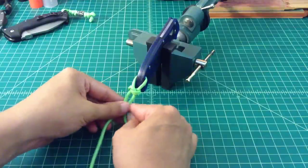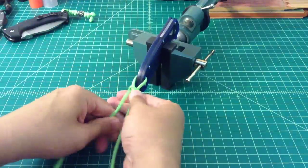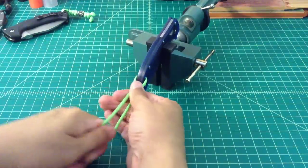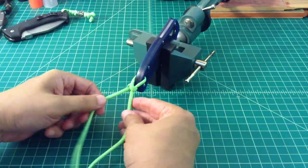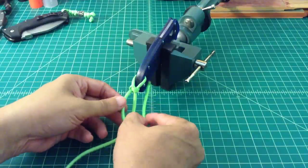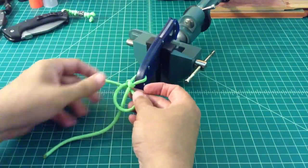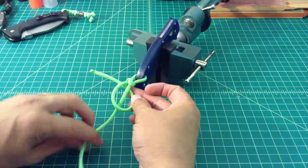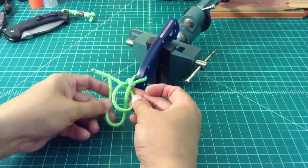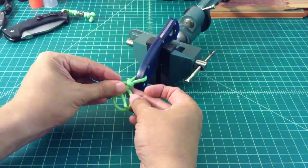You just want to go ahead and tie that up and that's what it's going to look like. Then you just want to do the exact same thing again. Go across and then under. Take the right hand side, go under, across and through that hole.